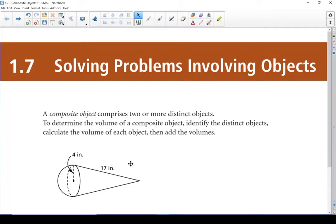Section 1.7: Solving problems involving objects. The main focus of this section is composite objects. A composite object is any time you've got two or more separate objects put together. For example, I've got that picture down below. There is no formula for that shape alone, but if I break it up into two parts we have a cone right here and then we have a hemisphere right here.